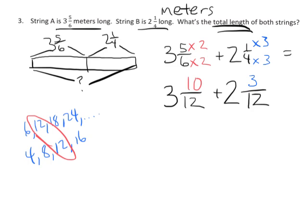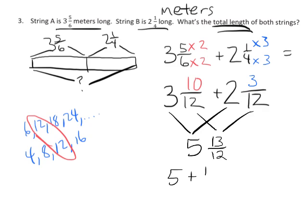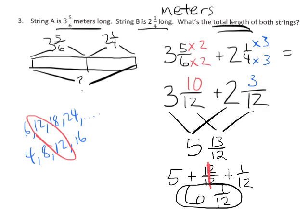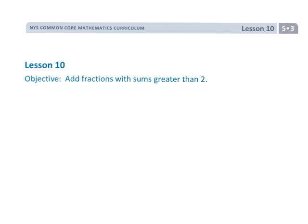Now we can add our whole numbers: 3 plus 2 gives us 5. And when we add our fractions, we get 13/12. That's going to change — we can simplify that. 13/12 can be thought of as 12/12 plus 1/12. 12/12 is equal to 1 whole. So our answer becomes 6 and 1/12 meters long. And that is 5th grade Module 3, Lesson 10 — adding fractions to get sums greater than 2, using that standard algorithm.